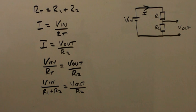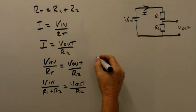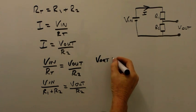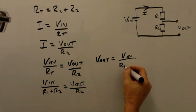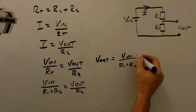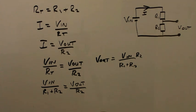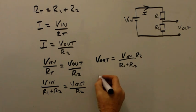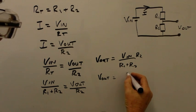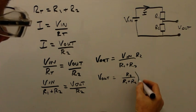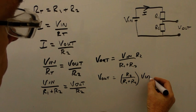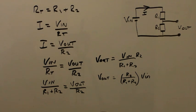Just doing the algebraic manipulation: if we take R2 over to the left and write Vout as the subject on the left-hand side, Vout equals V in over R1 plus R2, multiplied by R2. Rearranging, Vout equals R2 over R1 plus R2, multiplied by V in. Which is the equation that we're ultimately looking for.